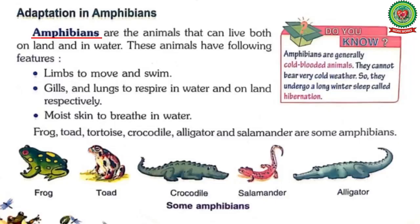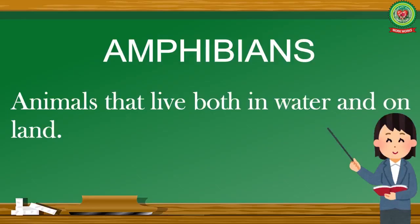Now the next topic is adaptation in amphibians. Underline the word 'amphibians.' The definition of amphibians is animals that live both in water and on land.